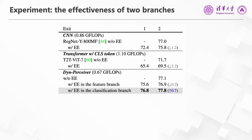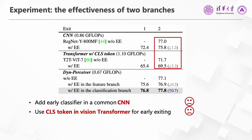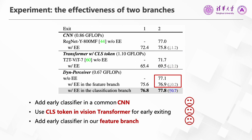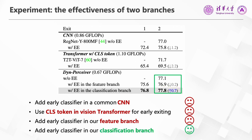We use this ablation study to show the effectiveness of our two-branch design. First, we directly add an early classifier in a CNN and a vision transformer with the classification token — the performance of their final exits drops significantly. Next, we add an early classifier in the Feature Branch of our Dynamic Perceiver, and the final exit's performance only slightly drops. Finally, when we add the early classifier in the Classification Branch, the final performance is even improved. These results demonstrate that our Classification Branch is suitable to construct intermediate classifiers, not only improving the final performance but also enabling dynamic early exiting during inference.